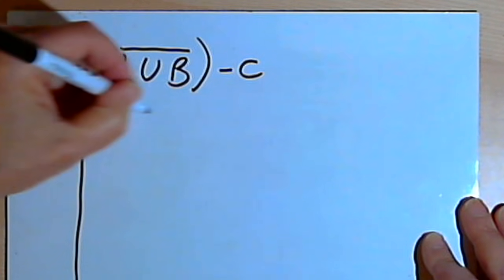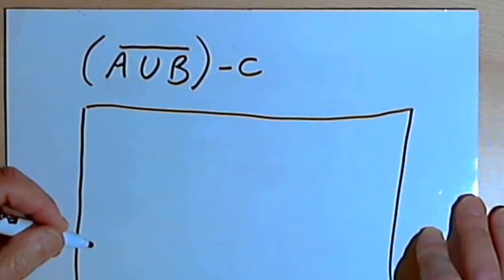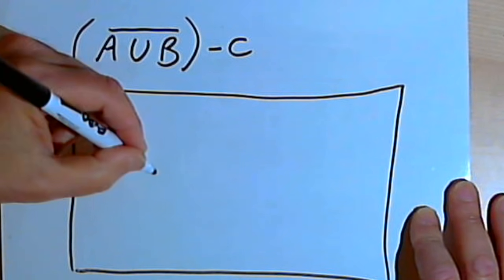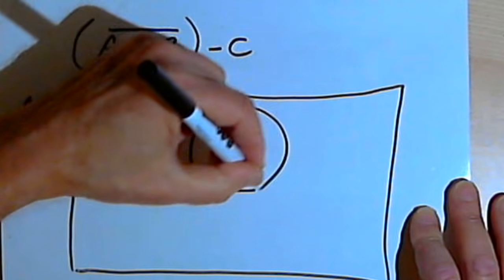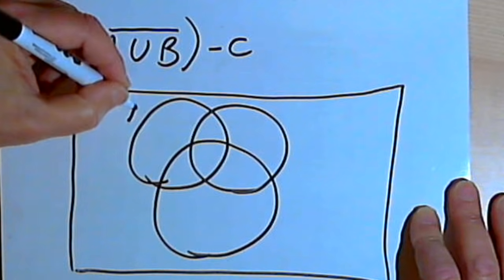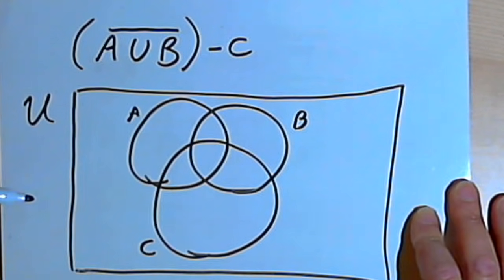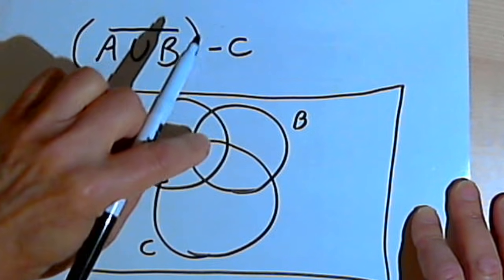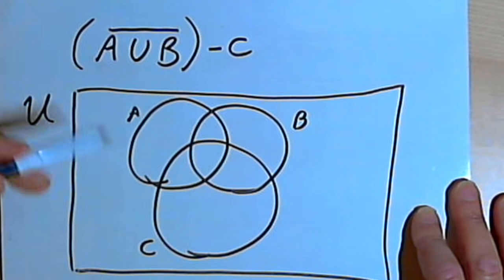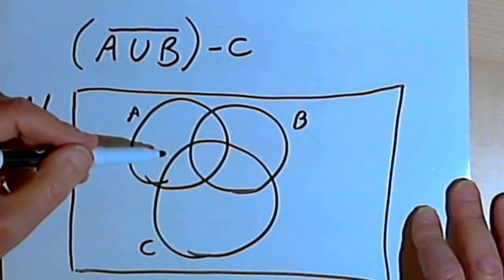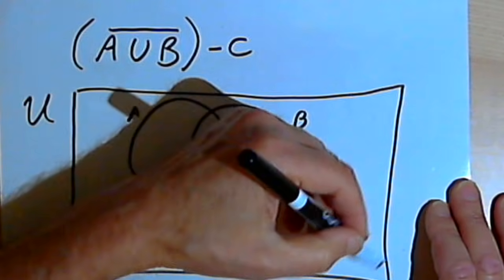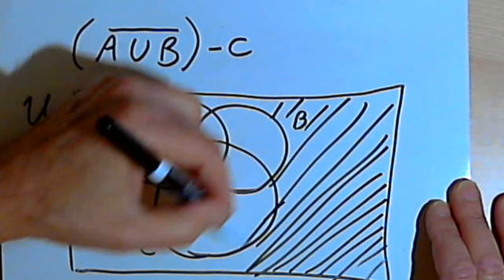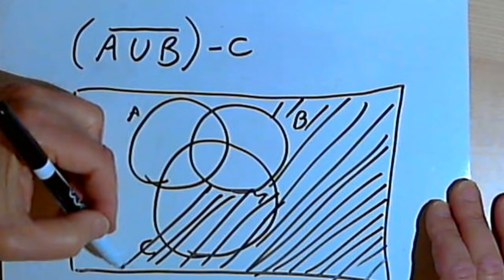You'll notice in all of these, I'm starting out inside the parentheses and then doing whatever else comes after. So my universal set has A, B, and C. The union of A and B would be the area within A, or the area within B, or the area where they overlap — but I want the complement of that. So I want to shade in anything that is not in A and not in B, which means I'm going outside the circles. I'm also shading in anything in C that is not in A or B.